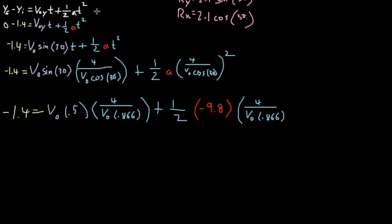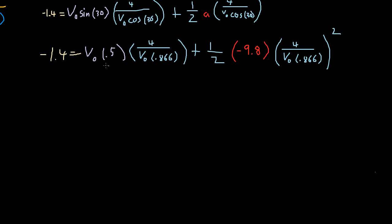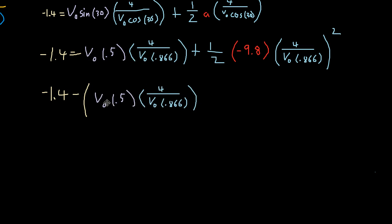So we just did cosine 30, so it's going to be this squared. We have a really long equation here now. Let's try to bring v0 into one place. I'm going to scroll down here a little bit. What I'm going to do here now is I'm going to subtract this part from each side. So what I'm going to get is negative 1.4 minus this, minus that.